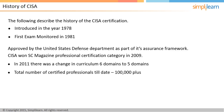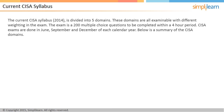The CISA exam covers five domain areas. These domains are all examinable with different weighting in the exam. The exam is 200 multiple-choice questions to be completed within a four-hour period.